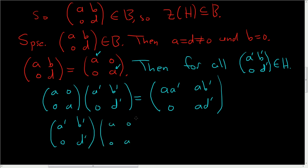So (a', b'; 0, d') times (a, 0; 0, a). This should be equal to (a'a, b'a; 0, d'a). And then the question is: are these equal?